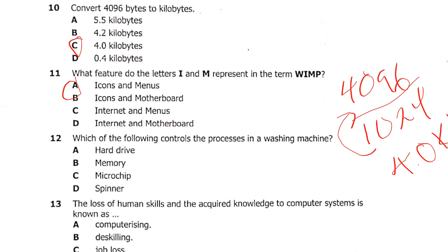Question 12: which of the following controls the processes in a washing machine? Is it A: hard drive, B: memory, C: microchip, or D: a spinner? The answer is C — a microchip controls the processes in a washing machine.